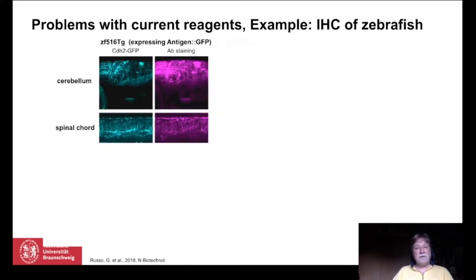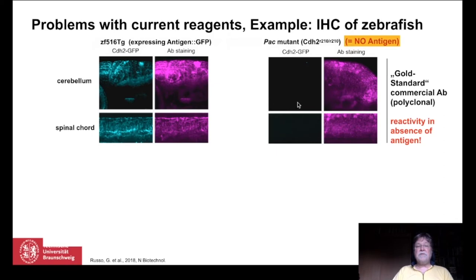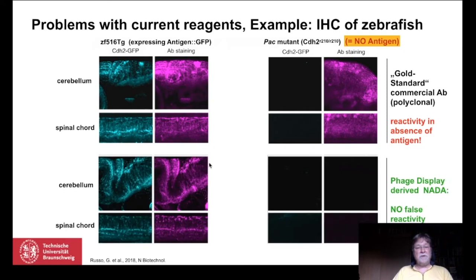Here is a more dramatic example of how animal-free antibodies can avoid false results. What you see is a whole mount from zebrafish — cerebellum, spinal cord, neuronal tissue. The blue fluorescent is a GFP labeling, so that's really the antigen present. When a gold standard antibody is used and then tested on a fish mutant which does not have the antigen, you still get a lot of reactivity — clearly many false positive results. Here is the same experiment done with a recombinant antibody, and you see everything is black where it should be black. No false reactivity. It can be done.